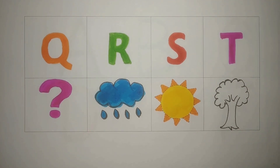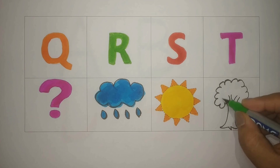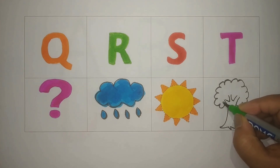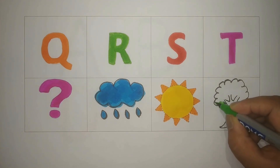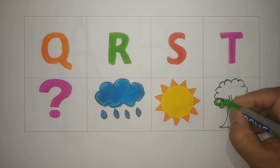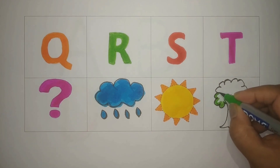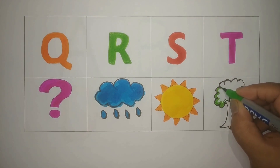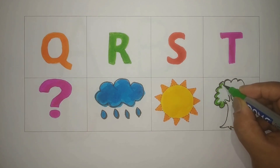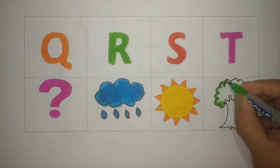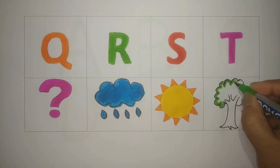What other words start with the letter T? T for tiger, teapot, and T for tree. Green color.